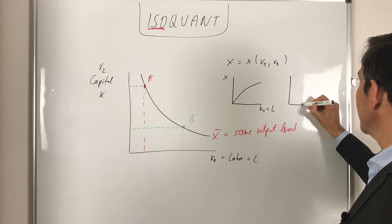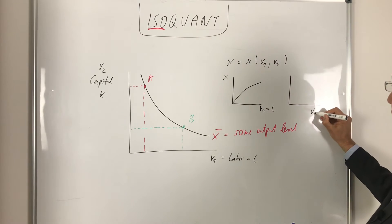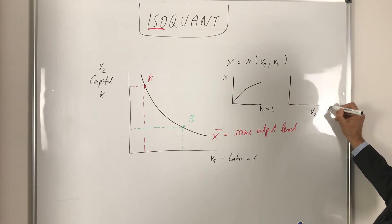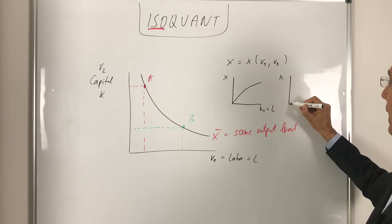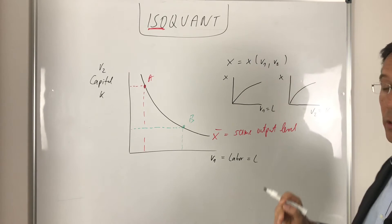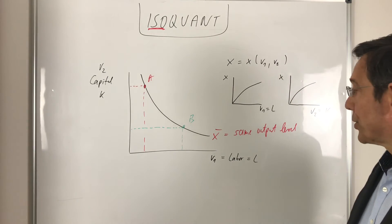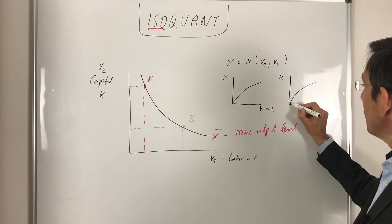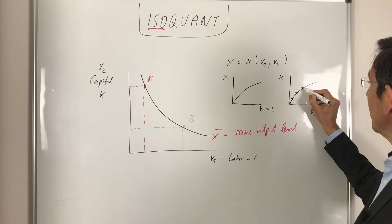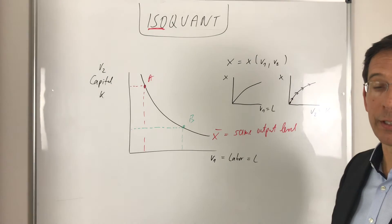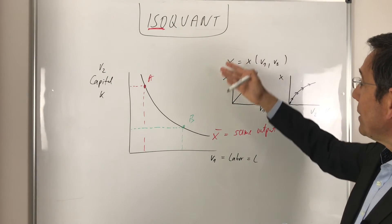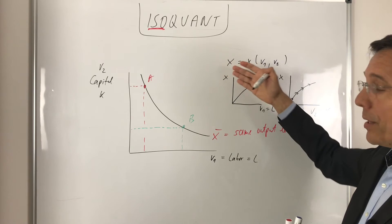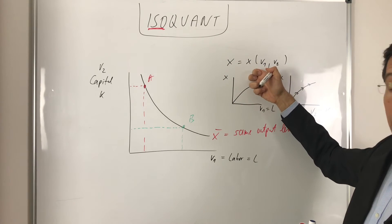And for the second input factor v2, which is capital, we also have this marginal productivity production function. So we start at high productivity and the marginal productivity is diminishing. So these two guys, these two production functions...